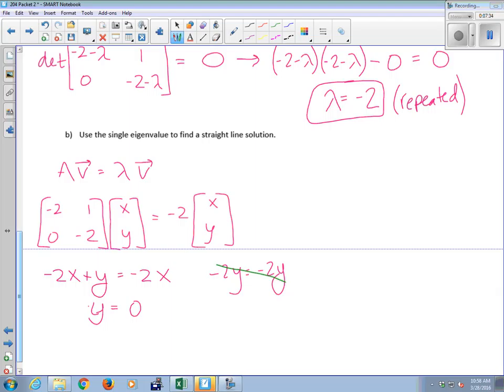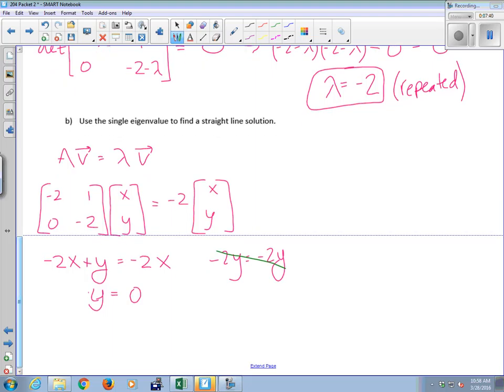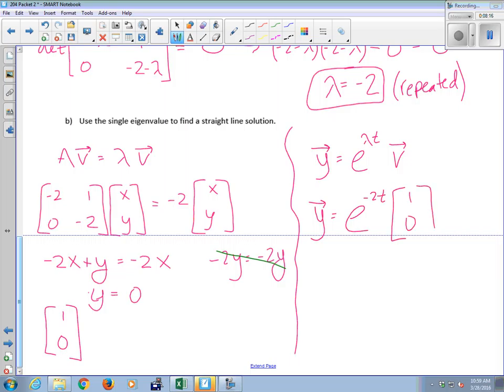Give me an eigenvector. 1, 0. Anything times 0 would be an associated eigenvector. In my phase portrait, the eigenvector points in the direction of my straight line solution. My straight line solution would be Y equals e to the lambda t V. In this case, I would have e to the negative 2t times (1, 0). Straight line solution. That is one particular solution, not the general solution to my system.